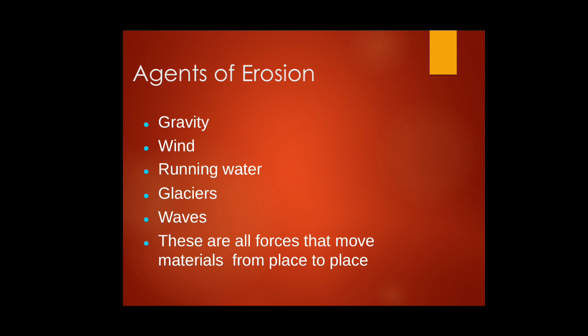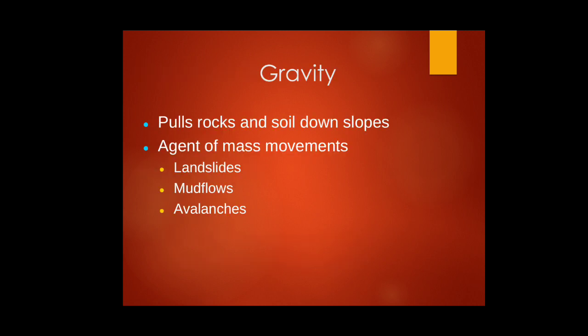The agents that take part in erosion are gravity, running water, glaciers, waves, and other associated forces. Gravity pulls down rocks, causing landslides and rocks rolling over slopes. The major mass movements witnessed today are landslides, mud flows, and avalanches.